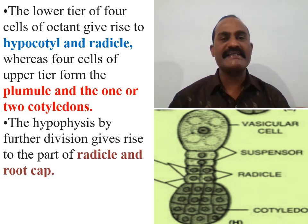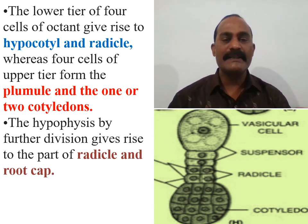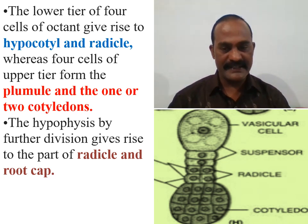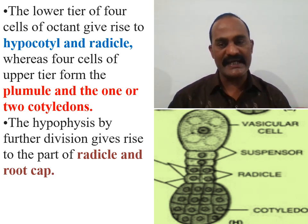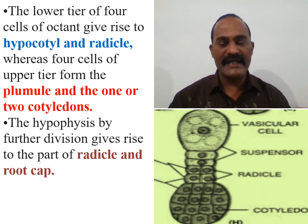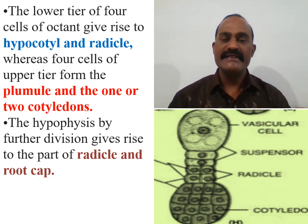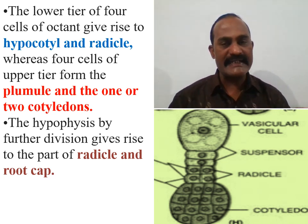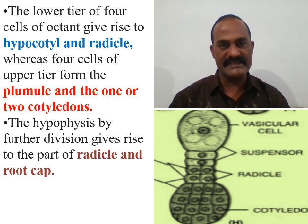The hypophysis, by further division, gives rise to part of the radicle as well as the root cap. The arrangement of the embryo cells forms the plumule, cotyledon, and radicle along with their allied components.